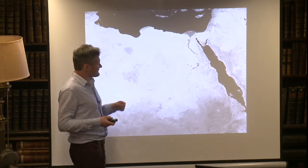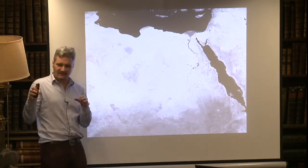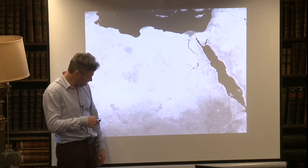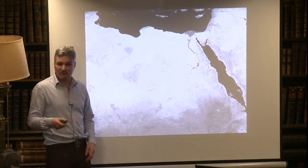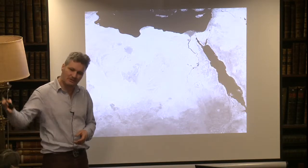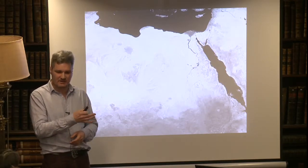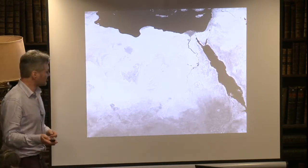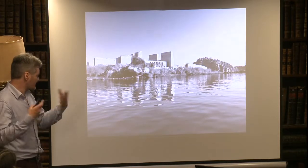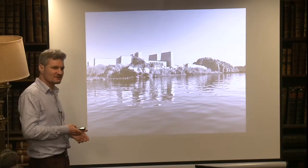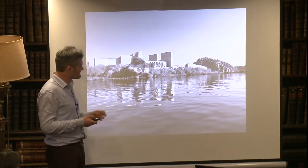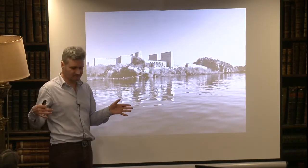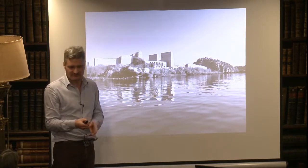Egypt is in the middle of a desert and it lives on the water of the Nile that comes down from the Ethiopian highlands. It wouldn't exist at all if it weren't for the annual flood that came down through antiquity every year, irrigating and nurturing all the crops that the Egyptian state lived on. The Nile is the lifeblood of Egyptian civilization.